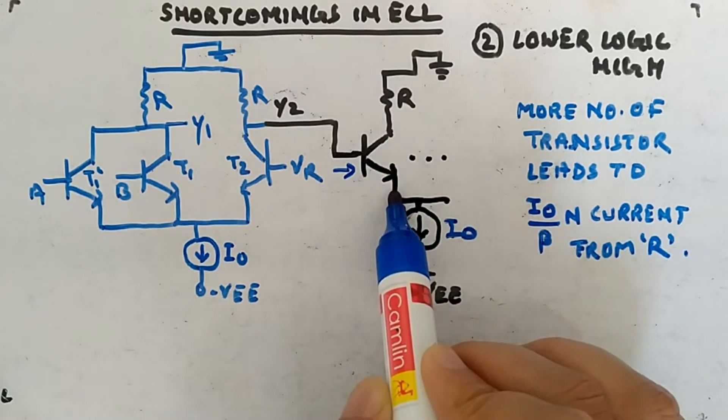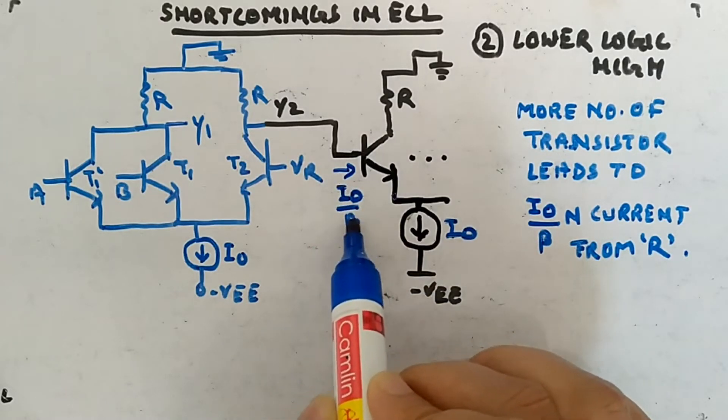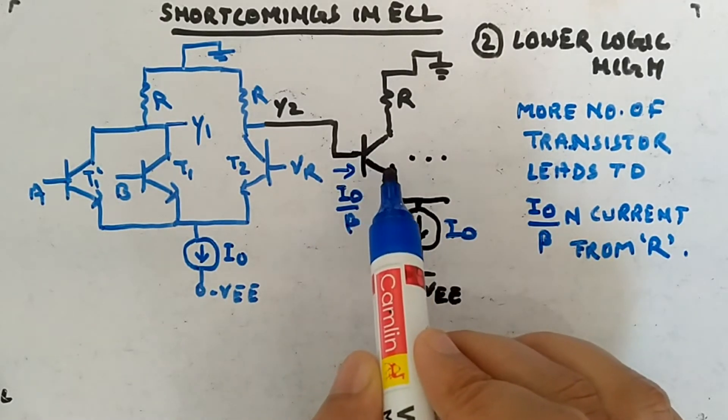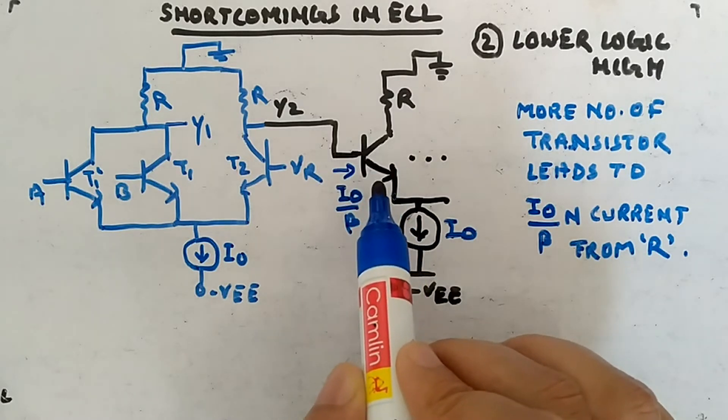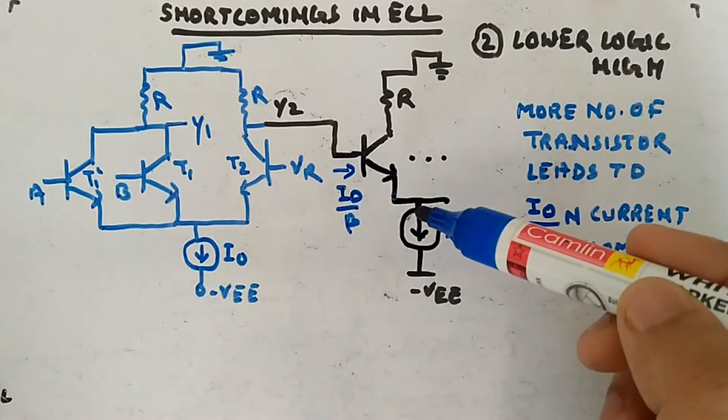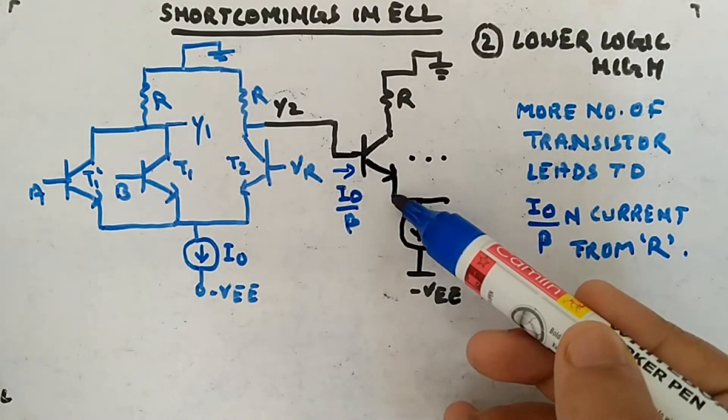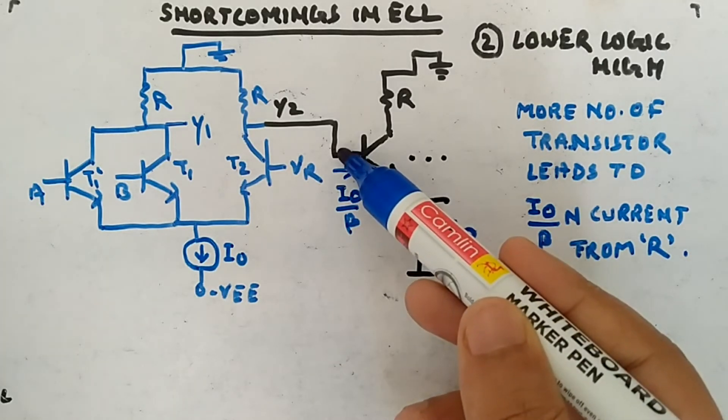I0 will be the current here, so I0 by beta will be the current here. It is common collector, base current whatever is coming, at the emitter you are taking the current, so it will be beta times. Going reverse means dividing it, so this current will be I0 by beta.